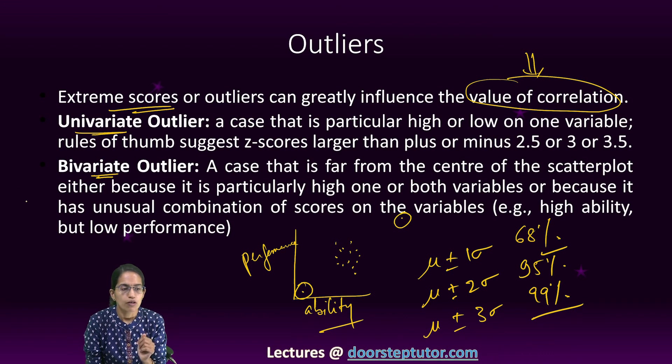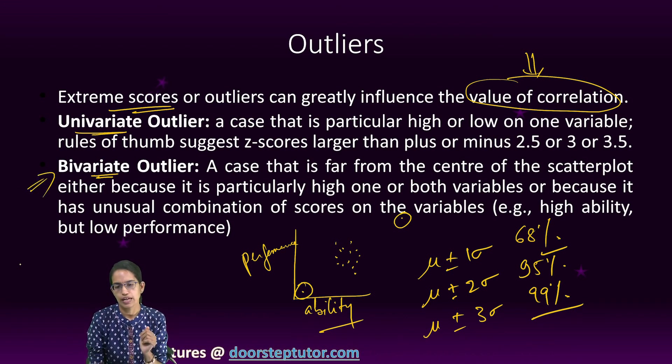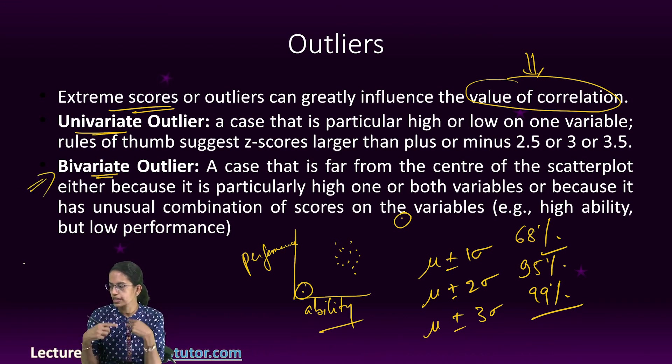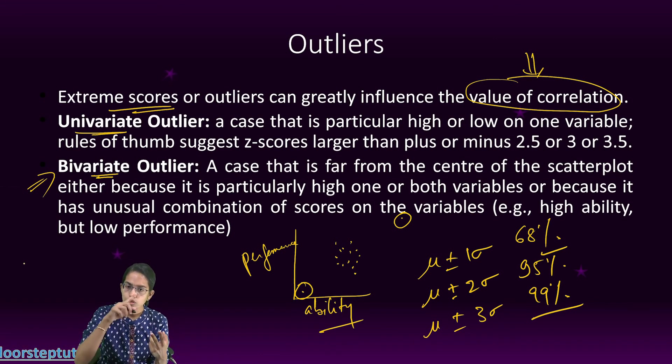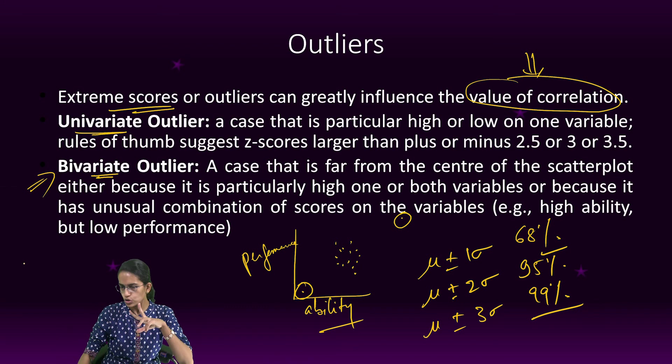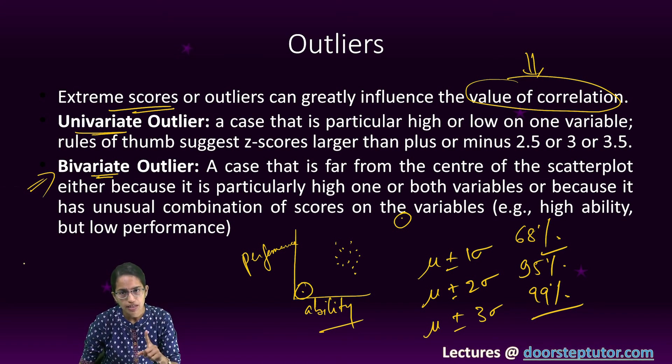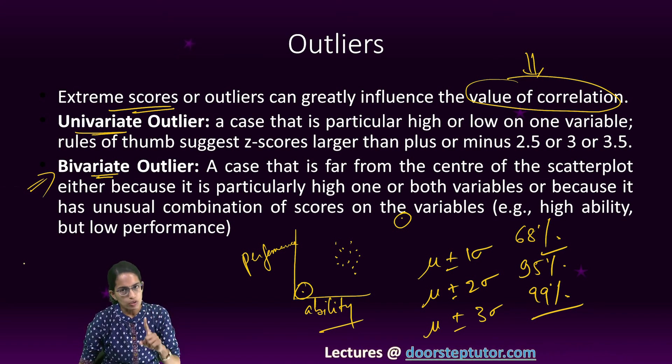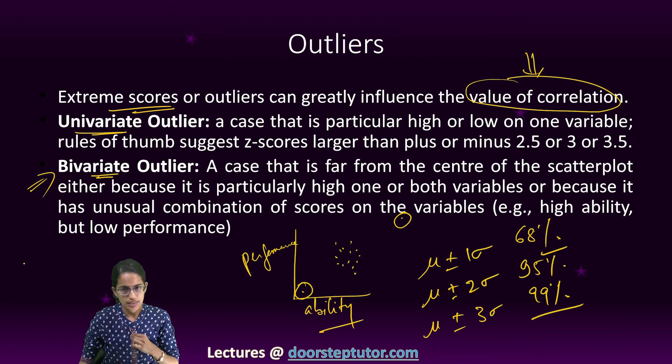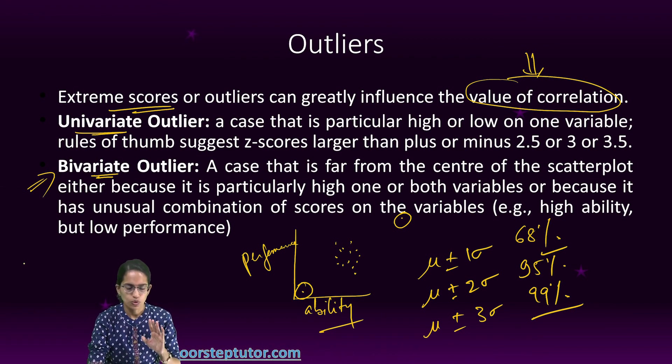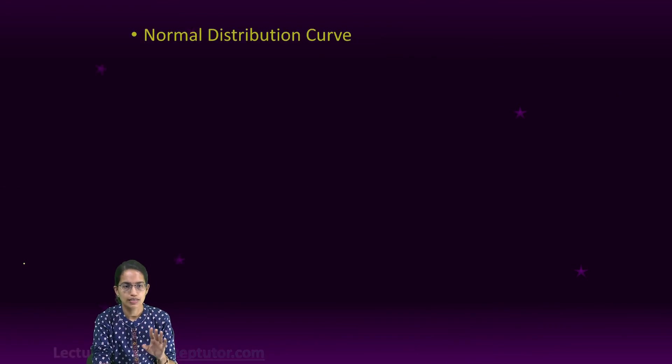Because there are more than one variable involved—both the performance and the ability—when two variables are involved, we call it a bivariate outlier. If it is just one variable involved, we call it a univariate outlier. So we have understood what are outliers and the types of outliers.